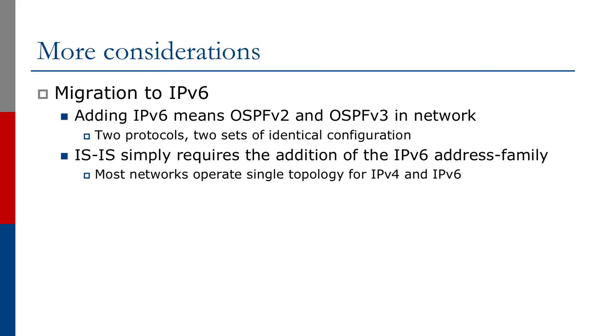Here's another consideration: the migration to IPv6. Adding IPv6 means we need OSPF v2 and OSPF v3 in the network. OSPF v2 only supports IPv4, and OSPF v3 only supports IPv6, meaning we need to run two routing protocols with two sets of identical configuration. For IS-IS, it's simply the addition of an IPv6 address family. IS-IS is multi-protocol, and most networks using IS-IS today will deploy IS-IS single topology handling both v4 and v6. New deployments use multi-topology where they can run separate topologies for v4 and v6, allowing an incremental deployment of IPv6 across their networks.